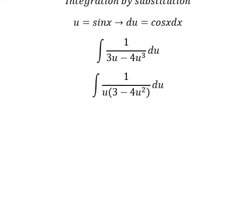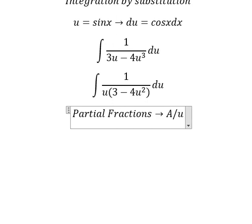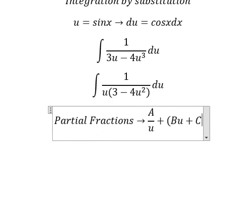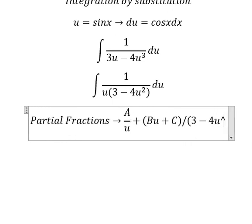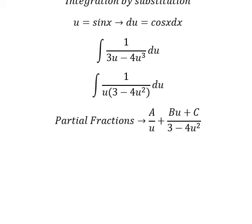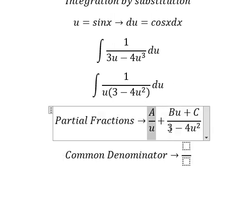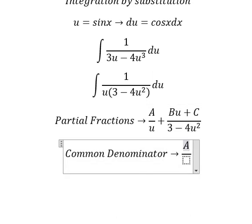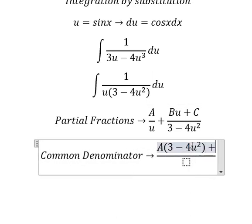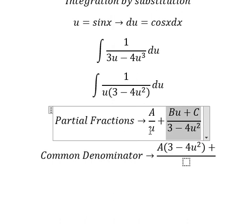Now we can use partial fractions. We decompose this as A over u plus (Bu + C) over (3 - 4u²). To find the coefficients, we need a common denominator, so we multiply each term appropriately.